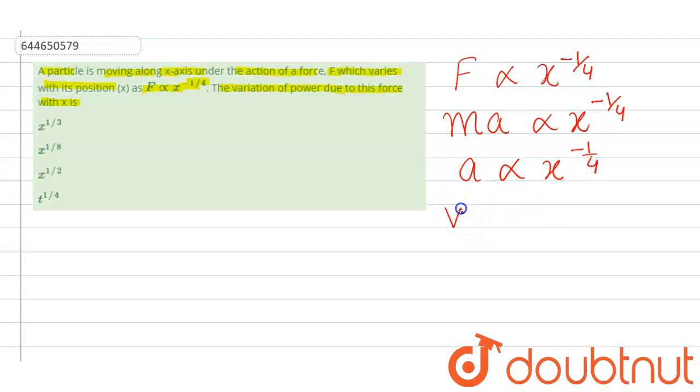So A can be written as V dV by dx is equal to K x to the power minus 1 by 4. So we can write V dV is equal to K x to the power minus 1 by 4 dx.